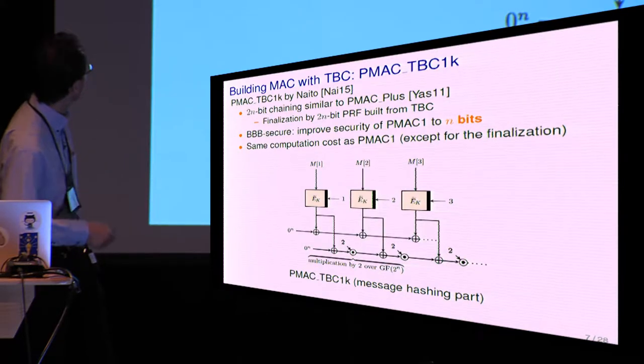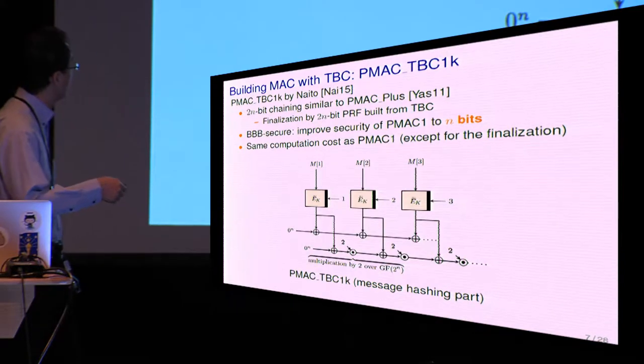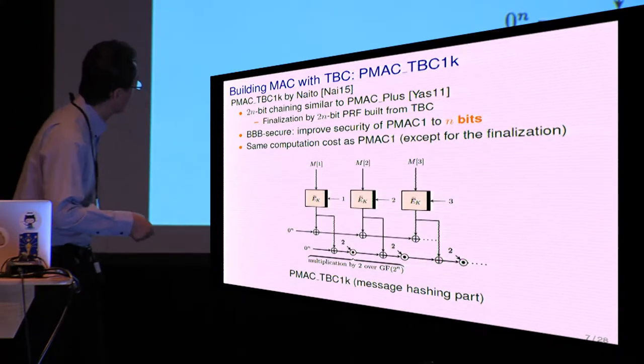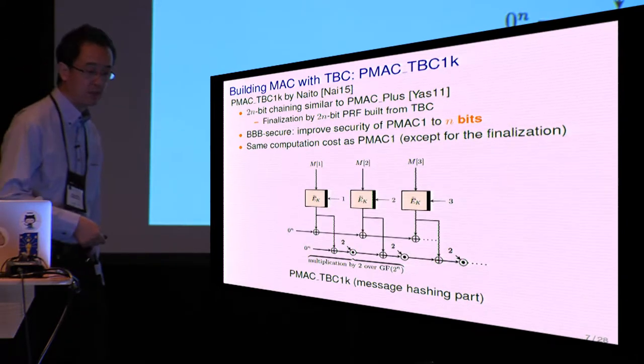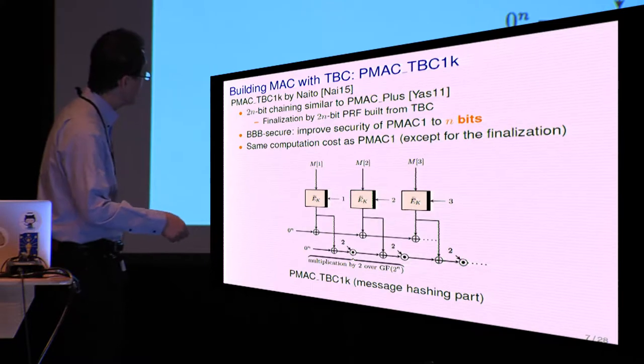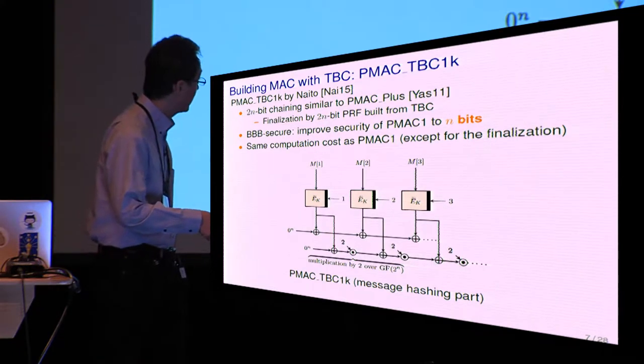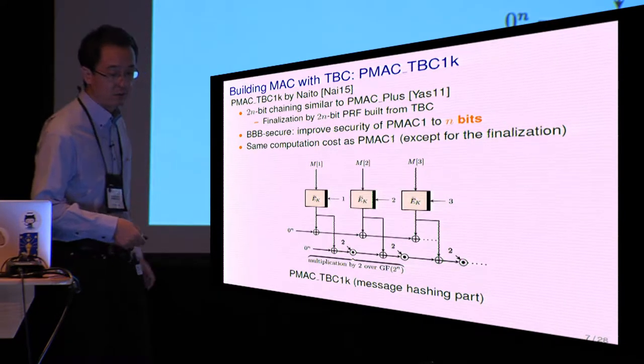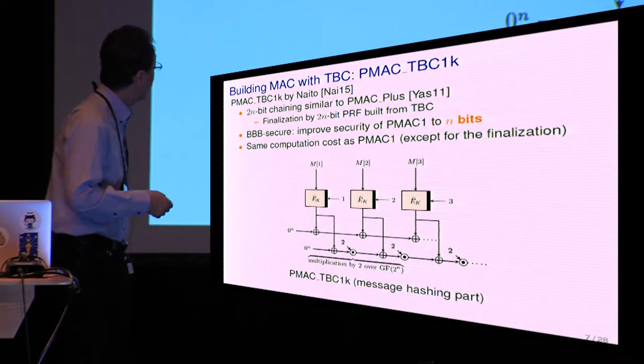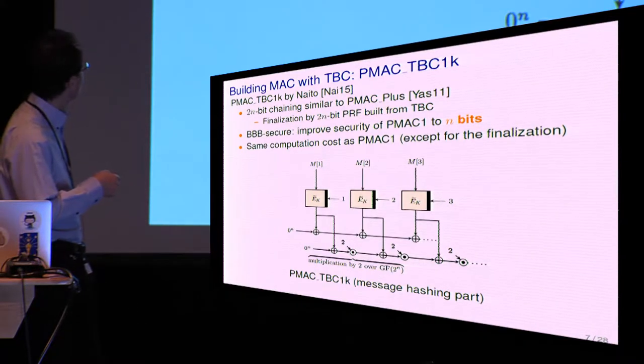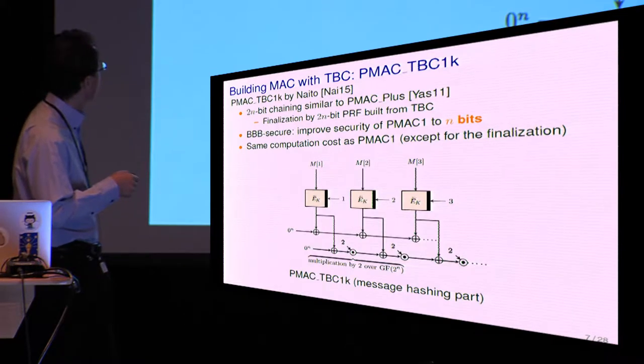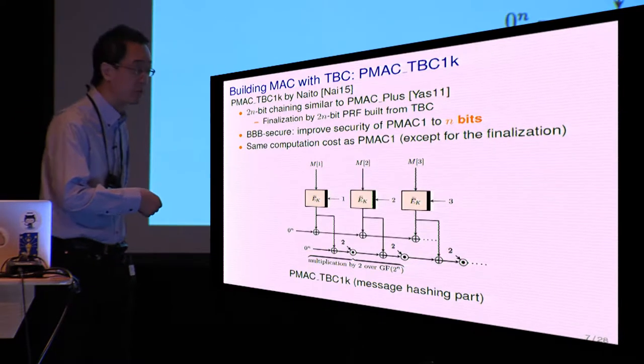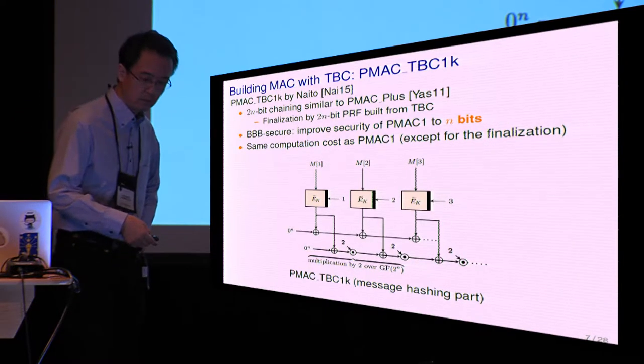Another one is PMAC-TBC1k, introduced by Naito in 2015, which is quite similar to PMAC1, but it employs a different chaining scheme, having a 2n-bit chaining scheme. This shows the message hashing part of PMAC-TBC1k, and there's another finalization step, which is essentially a 2n-bit input pseudorandom function built from TBC. A new feature of this scheme is it has beyond-birthday-bound security, that is, it improves the security to 2n bits, while keeping the same computation cost as PMAC1.